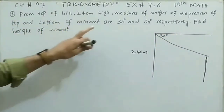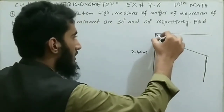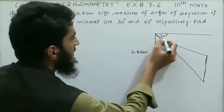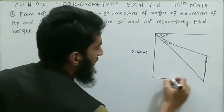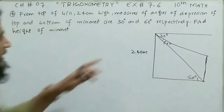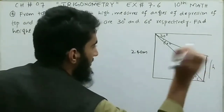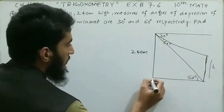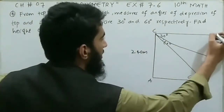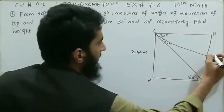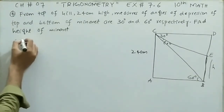The angle to the bottom is 60 degrees and the angle to the top is 30 degrees. We need to find the height of the minaret. Let the height be represented by H. Let's label the points: A at the top of the hill, B and C on the hill side, D at the top of the minaret, and E at the bottom of the minaret.